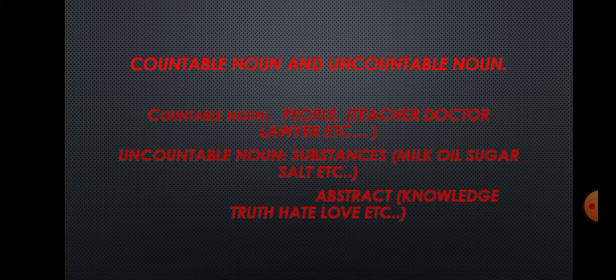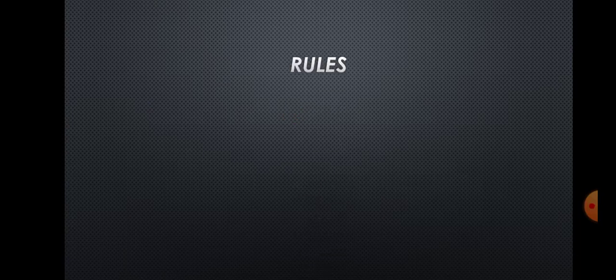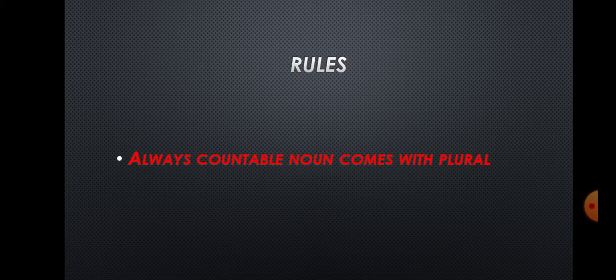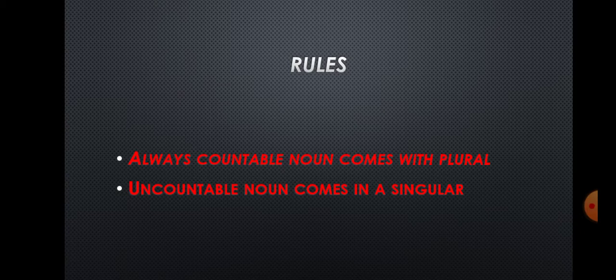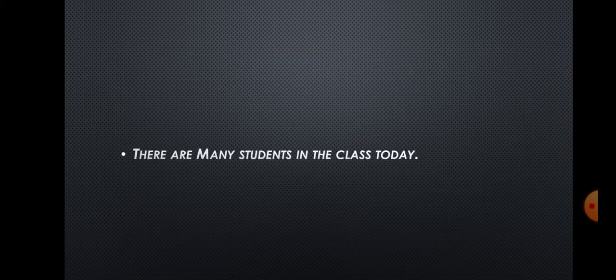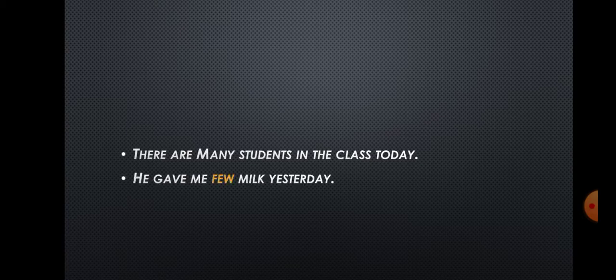Now the main important concept - rules. Without rules it's very difficult to understand. From childhood we are learning countable and uncountable noun, but when it comes to framing a sentence we make many mistakes. The first rule is: countable noun always comes with plural. That is the first rule. Uncountable noun comes in singular. First example: 'There are many students in the class today.' Students is a countable noun, so the first rule applies - students is plural.